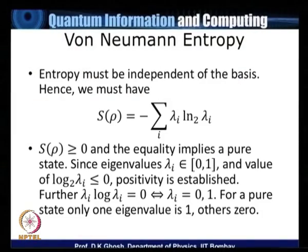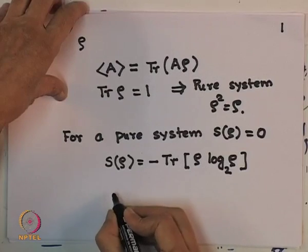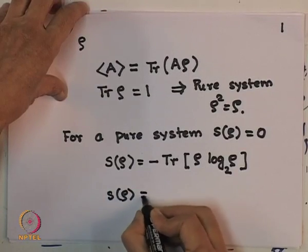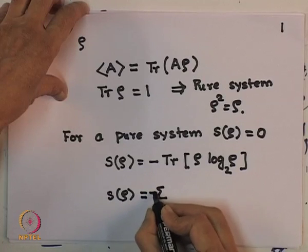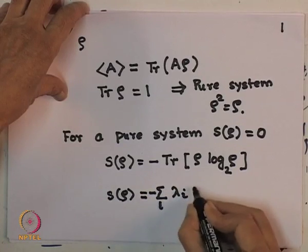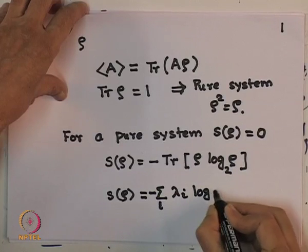Let us look at what are the properties of a system like this. First, since entropy must be independent of the basis in which you are calculating because it is a trace, I could go over to a representation in which ρ is diagonal, and then my S would be given by minus sum over i lambda i log lambda i.